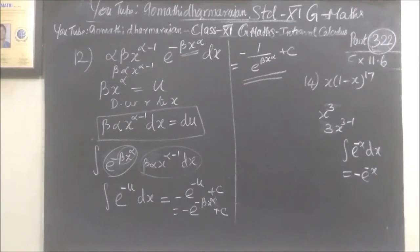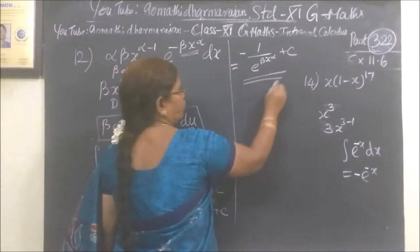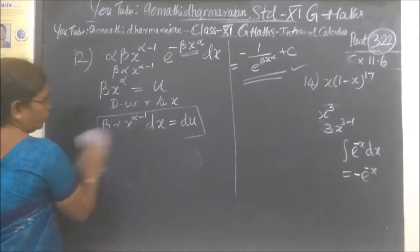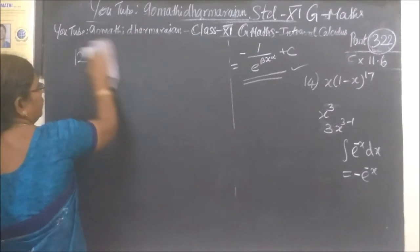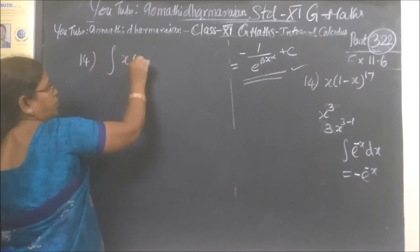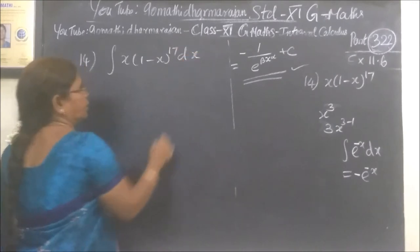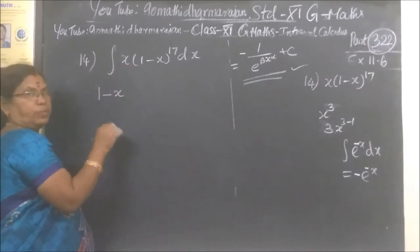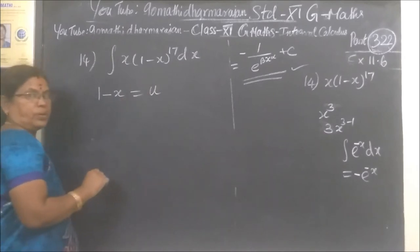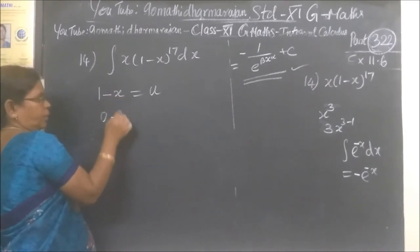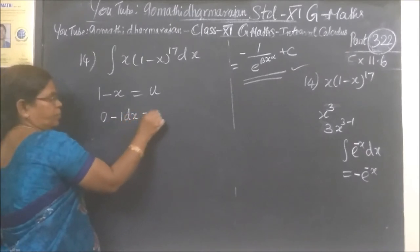Now we do the next problem. Integral of s times 1 minus s, whole power 13, ds. So what we need to do is differentiate — use u-substitution. That is u of balance: u equals 1 minus s, du equals ds.